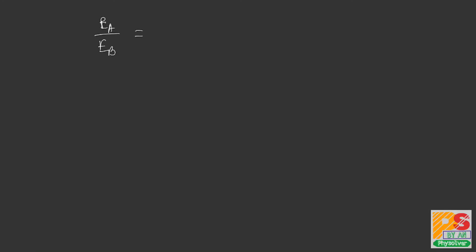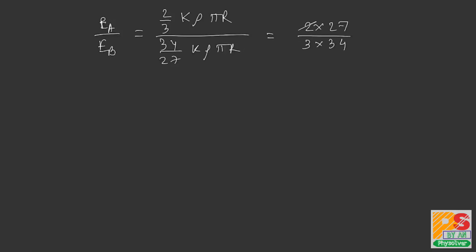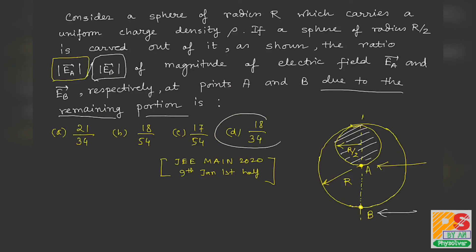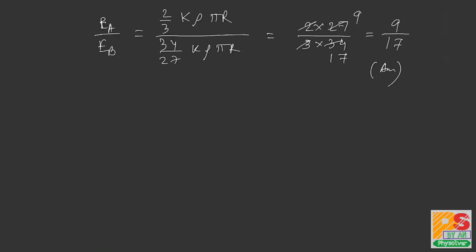The final answer is EA/EB = (2/3)kρπR ÷ (34/27)kρπR = (2 × 27)/(3 × 34) = 54/102 = 9/17. Looking at the options, 9/17 is equal to 18/34, so option D is correct. Thank you for watching this video, please subscribe to my channel Phi Solver.